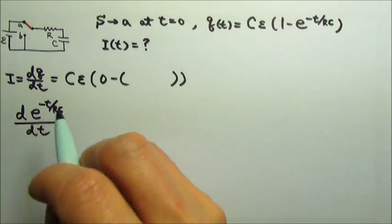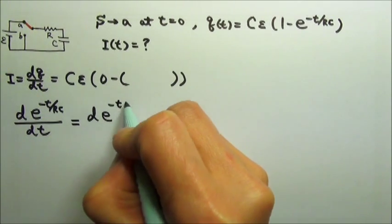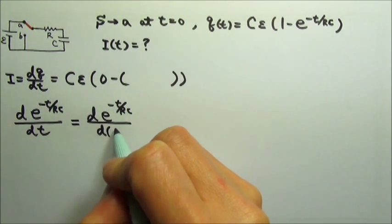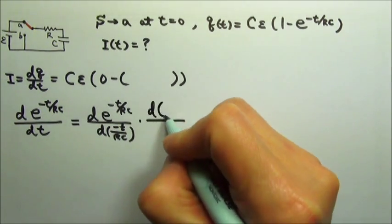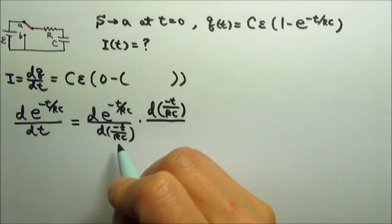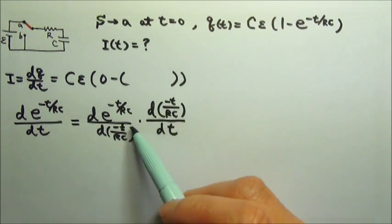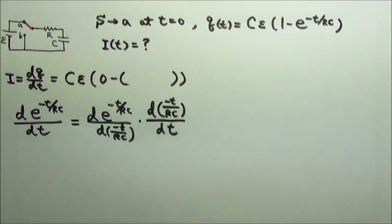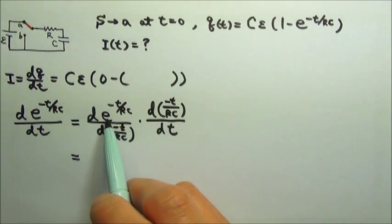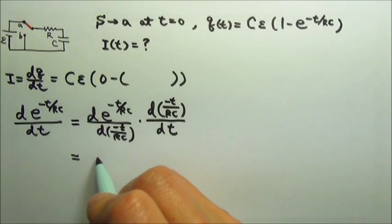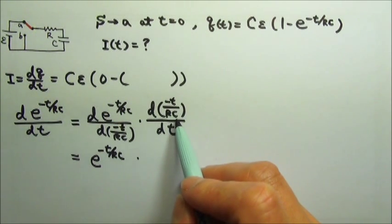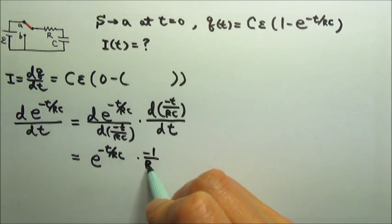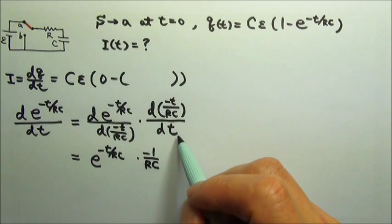We want this part to be exactly the same, so let's make sure that is the case. These two are not the same yet. To make them equal, we have to multiply by d(negative t over RC)/dt. It's kind of like these two cancel, so this is exactly the same as that — this is the chain rule. So now we have d(e^x)/dx, this part is e^x, and then we have negative 1 over RC as the constant coefficient. We can put it here, then take the derivative dt/dt, which is 1.